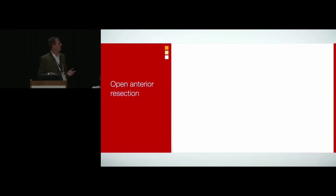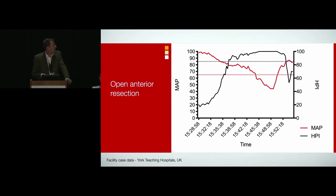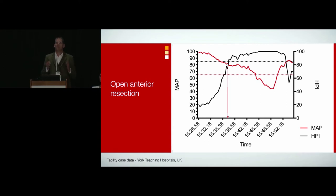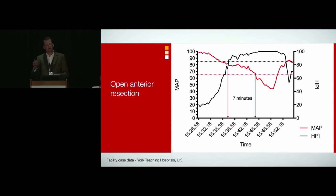Why is that important? The whole point is that you can intervene before hypotension happens. This is from an open anterior resection — the red line is mean arterial pressure, the black line is HPI. HPI alarms around about 85, which is when it has a high positive predictive value. At this threshold, we don't see hypotension for 7 minutes later. You have an early warning of impending hypotension, and once you have that, you interrogate the physiology to find the cause and treat it before it leads to hypotension.